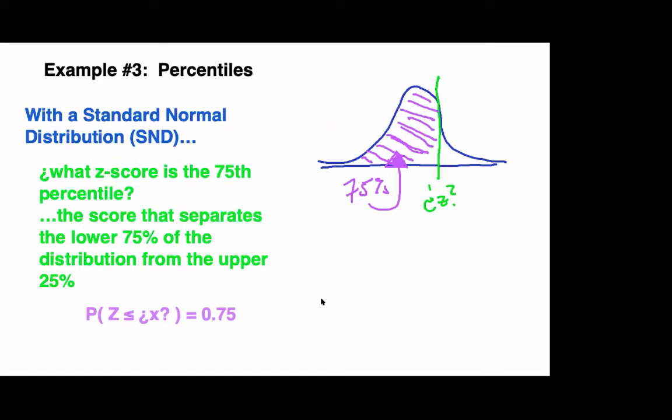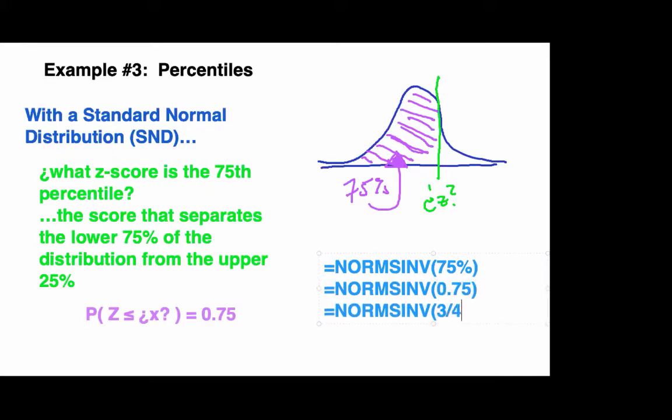Equals norm s-inv. Again, the s stands for the standard normal and the inv stands for inverse. Excel is smart enough to know that 75% can be written in a number of different ways. For example, 75%, 0.75%, or even 3 quarters. They all will return the same result. The result is 0.674.